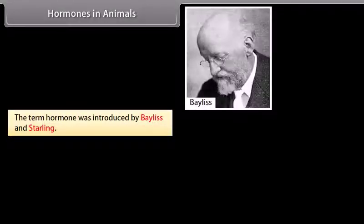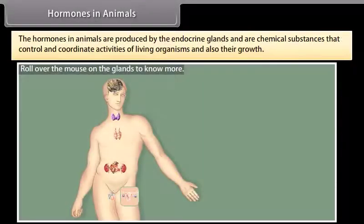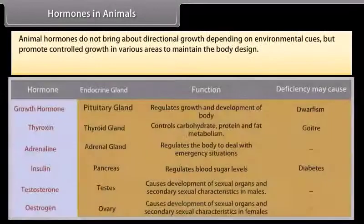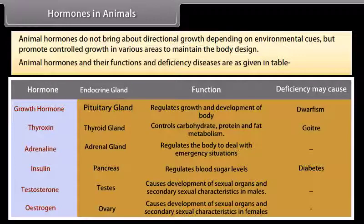The term hormone was introduced by Bayliss and Starling. The hormones in animals are produced by the endocrine glands and are chemical substances that control and coordinate activities of living organisms and their growth. Animal hormones do not bring about directional growth depending on environmental cues but promote controlled growth in various areas to maintain the body design. Animal hormones and their functions and deficiency diseases are given in a table.